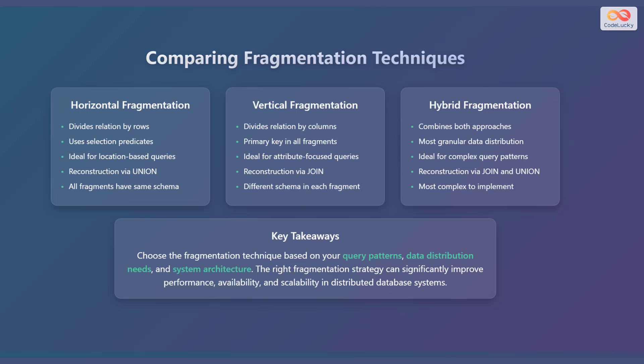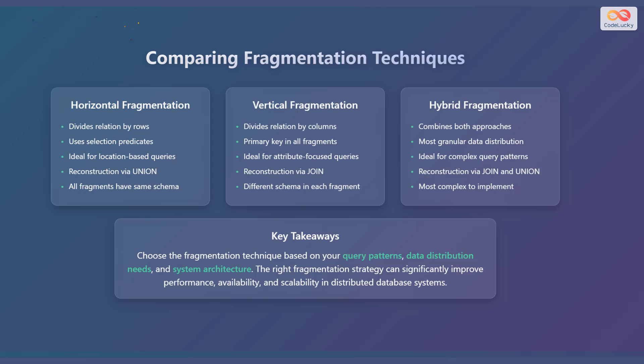Comparing the three fragmentation techniques: horizontal fragmentation divides the relation by rows, uses selection predicates, is ideal for location-based queries, reconstruction happens via union, and all fragments have the same schema. Vertical fragmentation divides the relation by columns, the primary key is present in all fragments, is ideal for attribute-focused queries, reconstruction happens via join, and different schemas are present in each fragment. Hybrid fragmentation combines both approaches, gives the most granular data distribution, is ideal for complex query patterns, reconstruction happens via join and union, and is the most complex to implement.